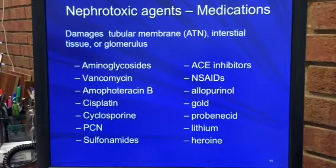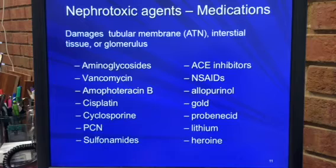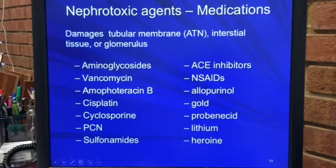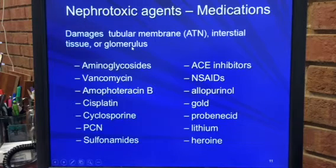The aminoglycosides include tobramycin, gentamicin, streptomycin, and amikacin. These appear to affect the tubular epithelium while leaving the basement membrane intact, as does amphotericin B.